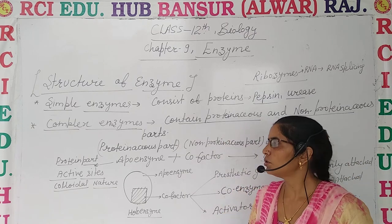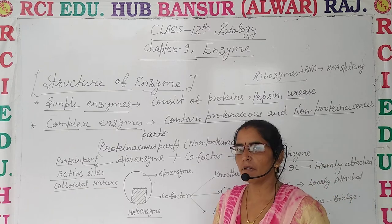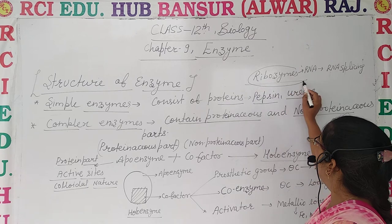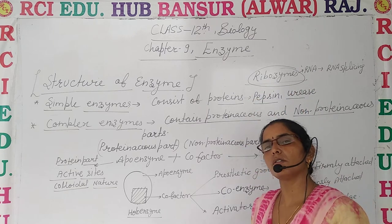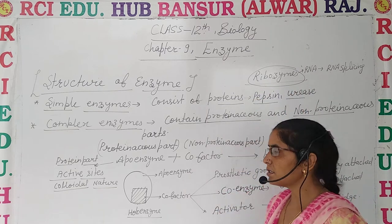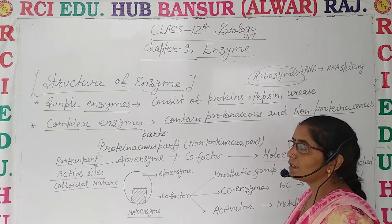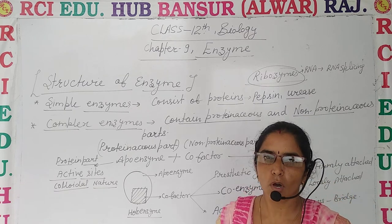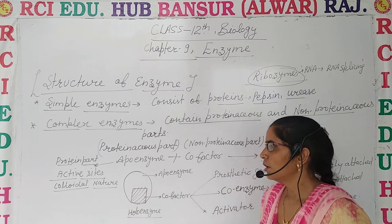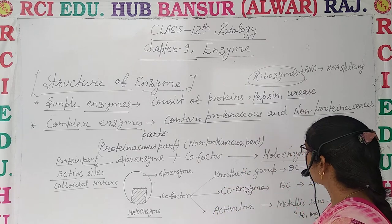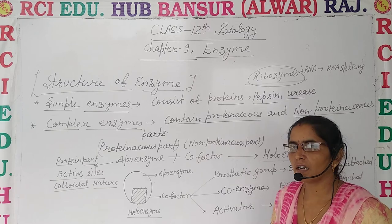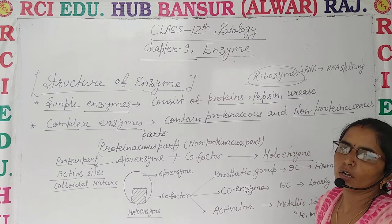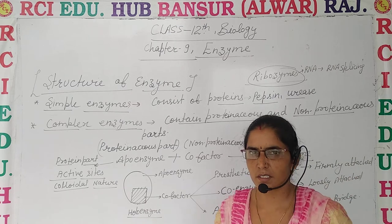Before discussing complex enzymes, let's have a look at ribozymes. This is a primitive type of enzyme discovered in ancient times. The important thing about ribozymes is that it is a non-protein enzyme — always remember this because it is an exception. It is a non-protein enzyme which consists of RNA, and it plays a vital role in RNA splicing or acts as a biocatalyst.